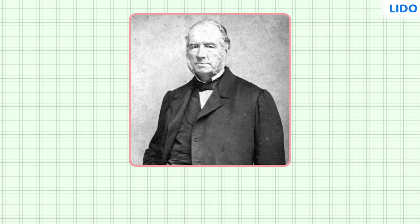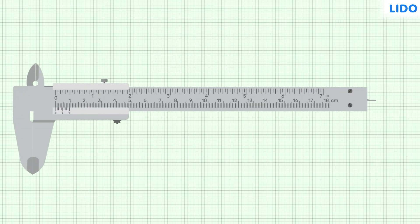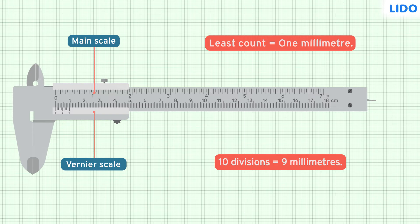To avoid this, a French mathematician Pierre Vernier used two separate scales. One scale is like a normal meter ruler having the least count of 1 mm. Another scale has 10 divisions, but these divisions are such that 10 divisions cover a distance of 9 mm. This is the Vernier scale.